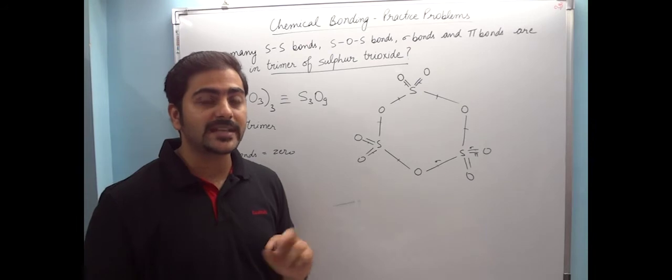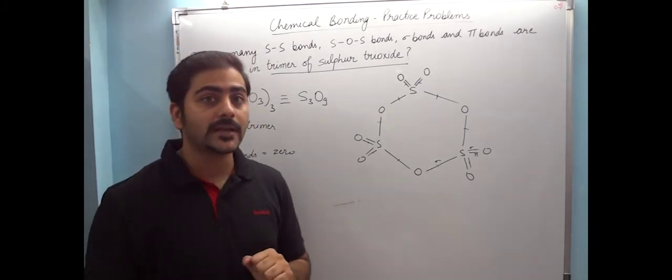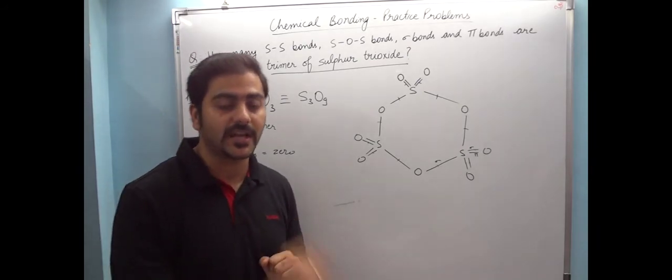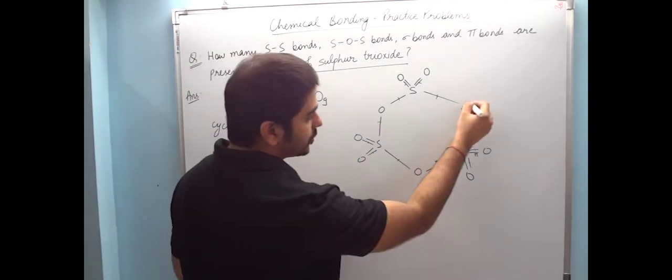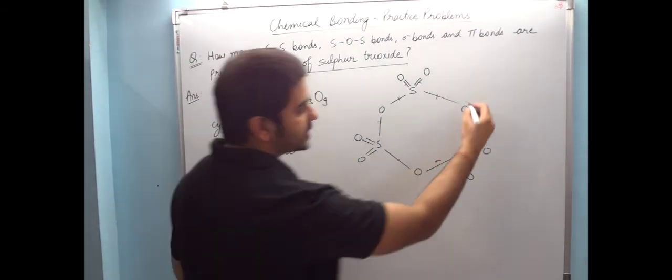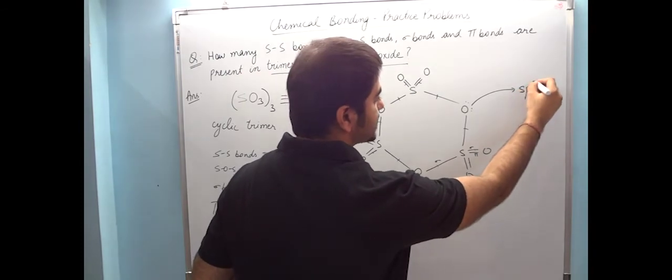How many oxygens are sp2 hybridized and how many oxygens are sp3 hybridized? So this oxygen has 2 lone pairs and 2 sigma bonds. So what is its hybridization? sp3.